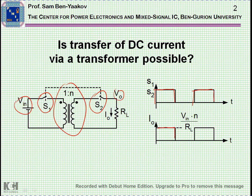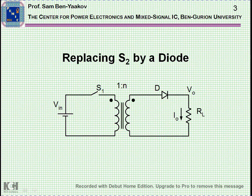The output voltage is VIN times N, and the turns ratio would determine the current. You'll have a pulsating current coming out, and if you have the proper filtering, you can get a DC current — continuous with some ripple on it. This is actually the principle that is used in the forward converter, but in a different way.